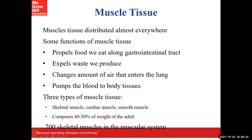Some functions of muscle include moving food through the GI tract — that's the role of smooth muscle, along with some skeletal muscle during voluntary chewing and swallowing. We also see how changes in air move in and out of the lungs: when the diaphragm contracts, it allows air into the thoracic cavity. Cardiac muscle pumps blood throughout the body to all different body tissues.